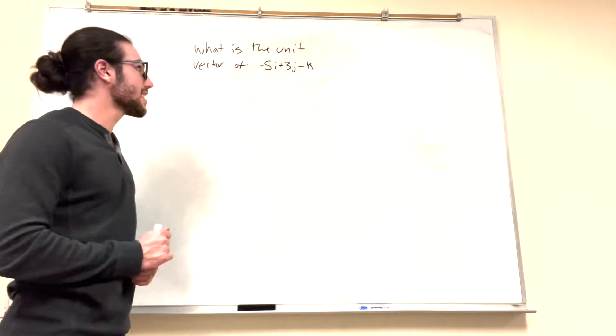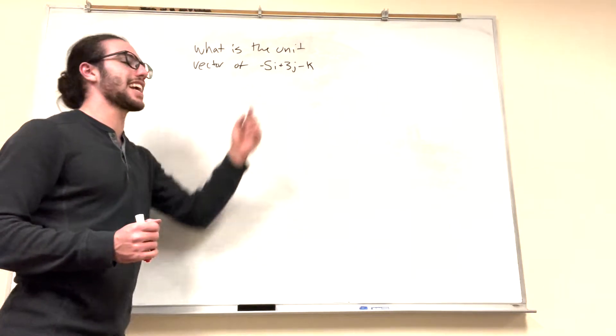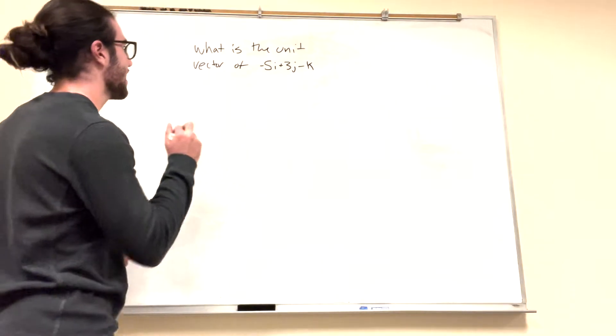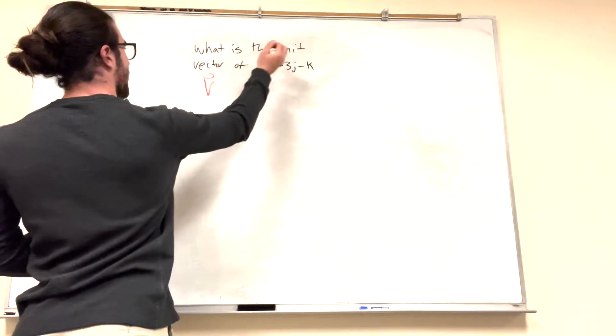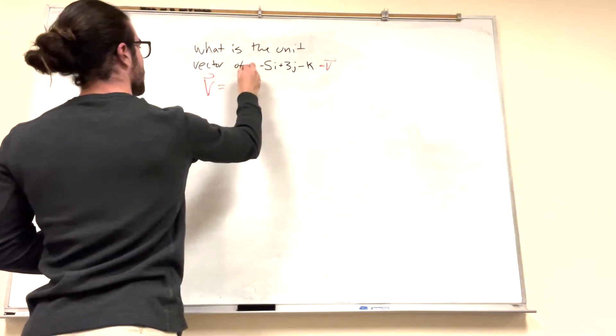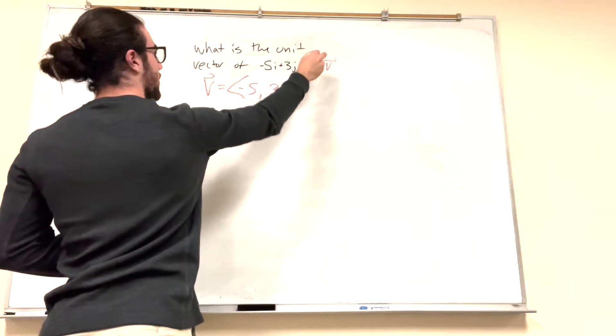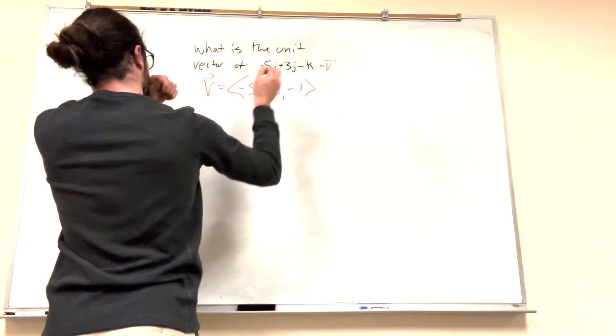Well, if you're like me, I don't like the ijk notation. I mean, I can figure it out, but I want to put it in a notation that I like. So, we can write it like this. Let's say this is equal to our vector. So, a vector is equal to negative 5, 3. This negative k is just a negative 1. Alright, we've got this.